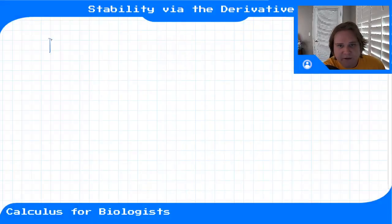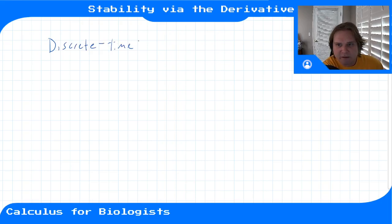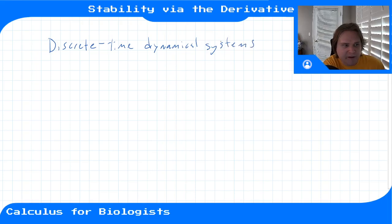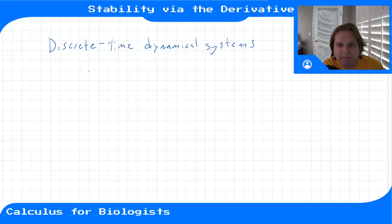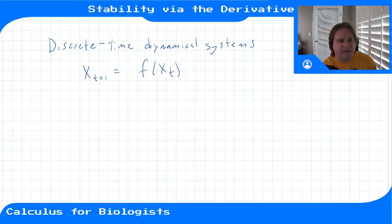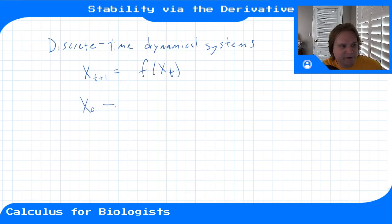We're returning to thinking about discrete time dynamical systems. Last video we did an optimization problem that came from a discrete time dynamical system. A discrete time dynamical system is anything of the form x(t+1) equals some function of x at time t, so you update variable x through time: x at time 0 gives x at time 1, gives x at time 2, and so on.